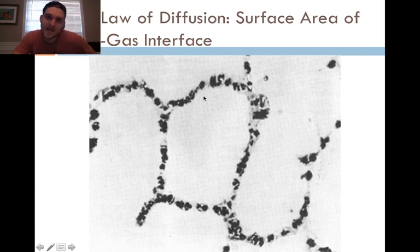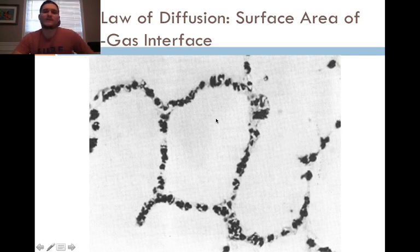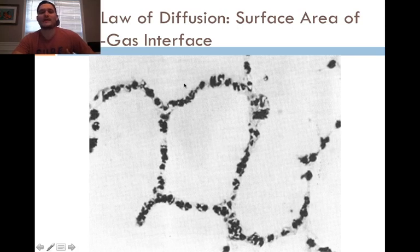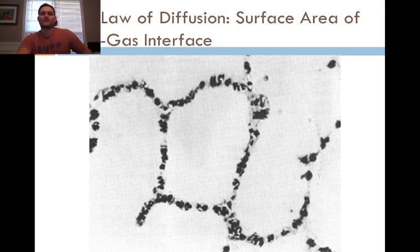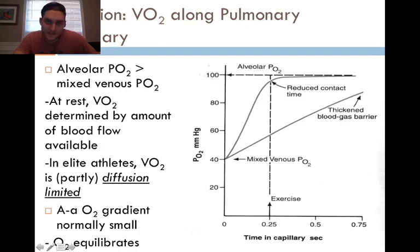Here we see a microscopic view of alveolar tissue, with blood capillaries surrounding the alveoli and red blood cells coming into contact with them. The more red blood cells and the more surface area between the capillaries and the alveolar space, the more diffusion you're going to get, and therefore you can increase the amount of arterial oxygen content.